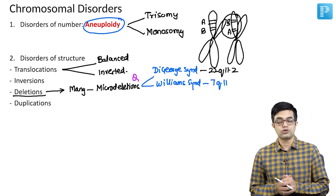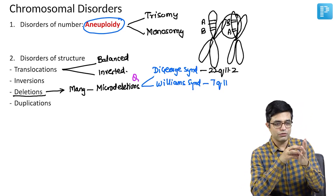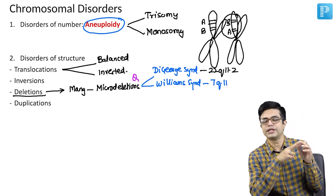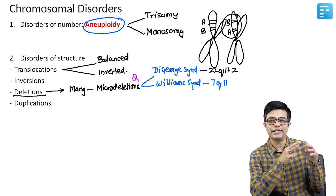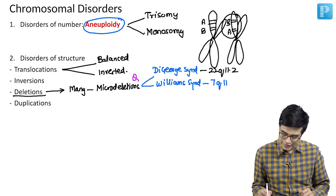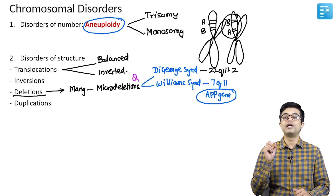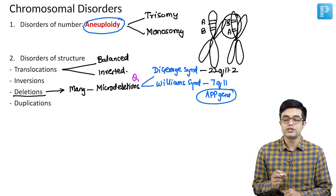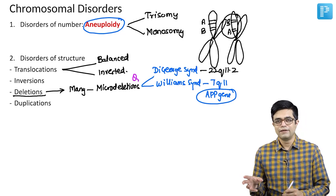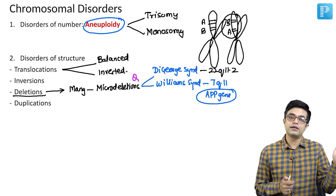Another variety of chromosomal structural disorder is duplication. The same gene may become duplicated. If a particular gene is present in two copies, it may not cause a problem, but if three copies exist, disease may be produced. A typical example is the APP gene, present on chromosome 21, which is responsible for Alzheimer's disease. Down syndrome children with three copies of chromosome 21 also have three copies of APP gene — that is why Down syndrome has early-onset Alzheimer's disease.